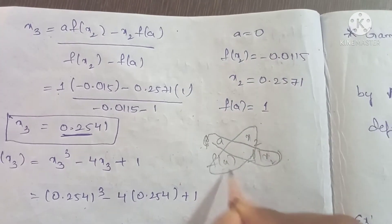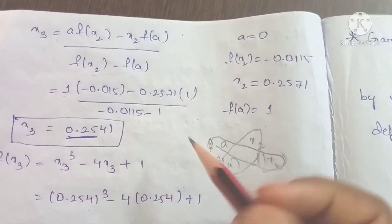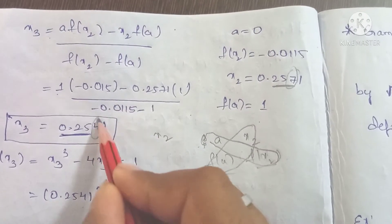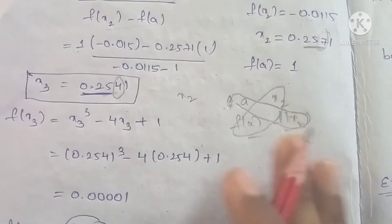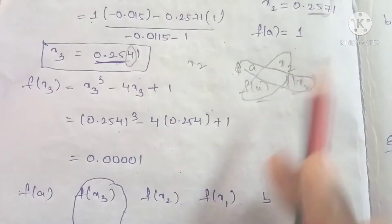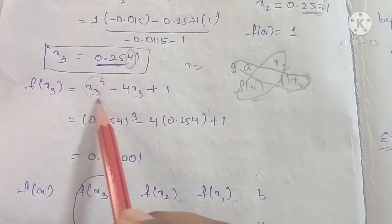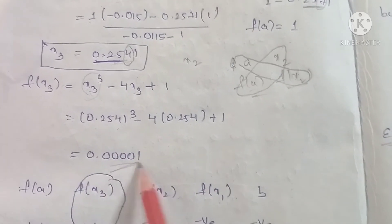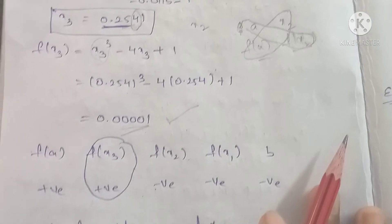Using the formula with a and x2: x3 = (a × f(x2) - x2 × f(a)) / (f(x2) - f(a)). Substituting x3 = 0.254. Then f(x3) = (0.254)³ - 4×0.254 + 1 ≈ 0.0001.